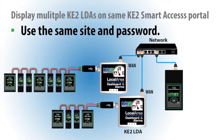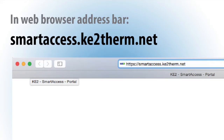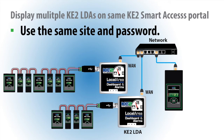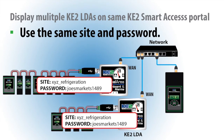The great thing is multiple Key2 LDAs can be assigned to the same Key2 Smart Access portal. So if you have a site with multiple Key2 LDAs, even individual Ethernet controllers that are connected to the internet, you can view them all at once on the dashboard. Clicking on the arrow next to your portal name or entering smartaccess.keytotherm.net in your web browser will take you to the site. To add additional Key2 LDAs or individual controllers to the same portal, simply set them up with the exact same site and password information.